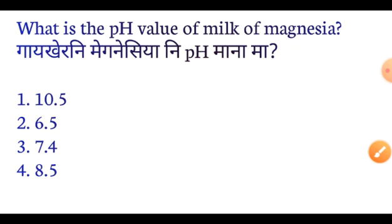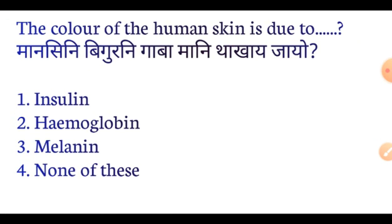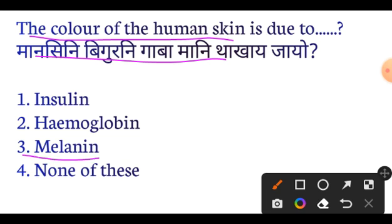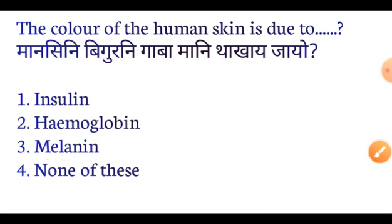Please like and subscribe to the channel. Next question: The color of human skin is due to which pigment? The answer is Melanin. Melanin determines skin color — important.